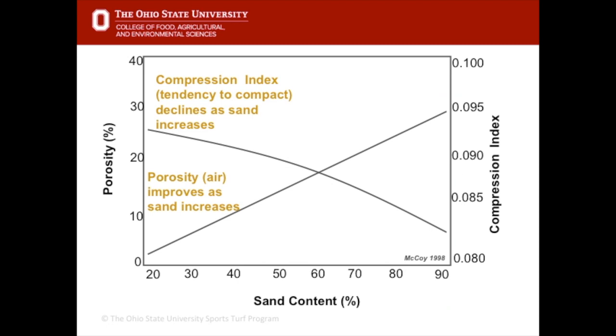As we can see from this chart, sand increases the amount of air spaces in the soil and also reduces the tendency for that soil to become compacted.